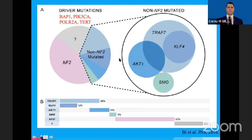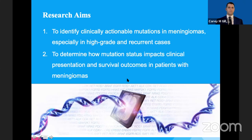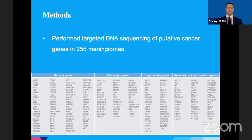Last year working with Dr. Srivastava, we had two research aims: one, to identify clinically actionable mutations in meningiomas, especially in high-grade and recurrent cases; and two, to determine how mutation status impacts clinical presentation and survival outcomes in patients with meningiomas. We amassed a cohort of 255 meningiomas resected at Mount Sinai and performed targeted DNA sequencing of putative cancer genes in these samples.